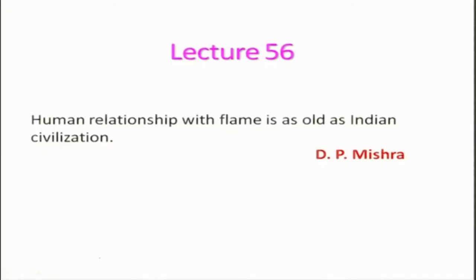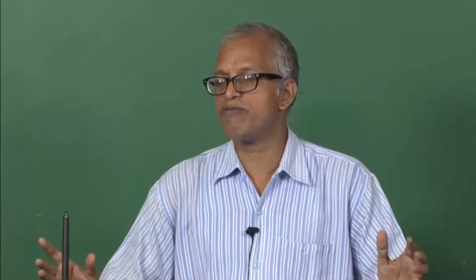Let us start this lecture with the thought that human relationship with flame is as old as Indian civilization, which is the oldest civilization in the entire world. In the last lecture, we looked at flammability limits, then moved into flame stability, discussed various regimes of lifted flame, blow off, flashback, stable flame, and oscillating flames. We also derived the expression for the velocity gradient at the rim, which dictates whether a Bunsen flame will be stable, unstable, or blow off.